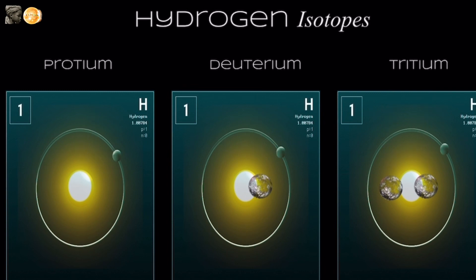You see, while the positive energy is the same in each atom type, the neutral energy varies. Here's what I mean.